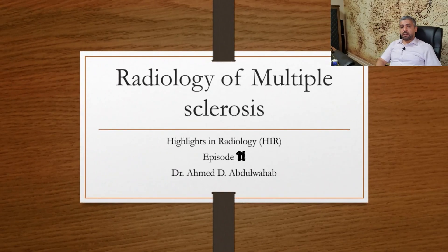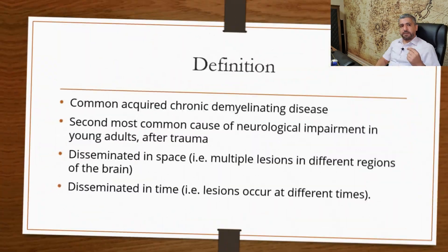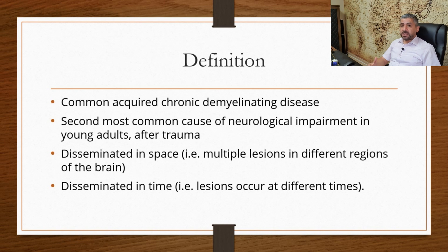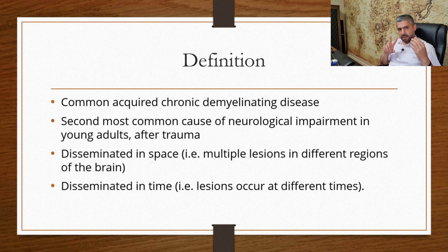We will talk about the different criteria that we see on MRI to diagnose and to follow up patients who have multiple sclerosis. First of all, let's talk about the definition. Multiple sclerosis is a common chronic acquired demyelinating disease — there is stripping of the myelin sheath surrounding the nerve fibers. It is the second most common cause of neurological impairment in young adults, after trauma. It should have two clinical criteria to diagnose it: the findings should be disseminated in time and disseminated in space.